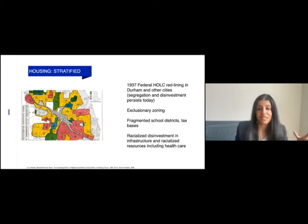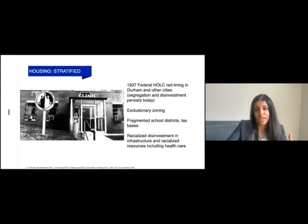In 1937, the Federal Housing and Lending Corporation redlined Durham and other cities using color-coded maps that rated neighborhoods based on risk of lending. Green were safest, followed by blue, yellow, and red which were riskiest. The presence of Black individuals, immigrants, and poor people were considered the biggest risk factors. This resulted in exclusionary zoning and disinvestment in infrastructure and resources including health care.